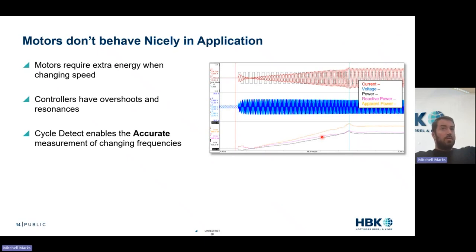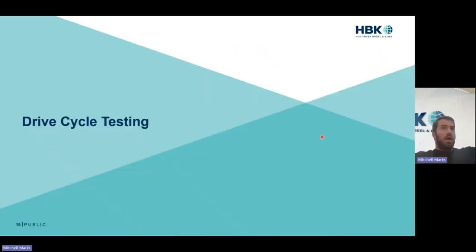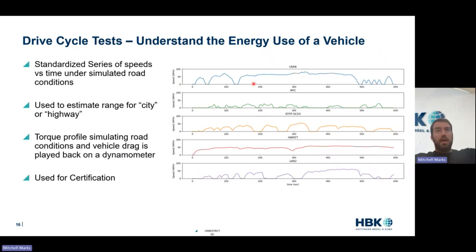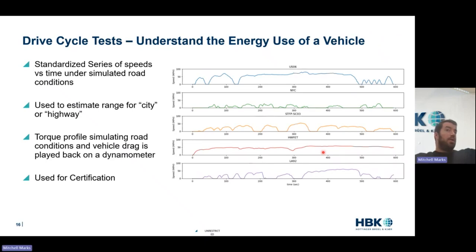In practice, this is what we refer to as drive cycle testing. Another thing that won't surprise anyone from the automotive side is that we have standardized drive cycles. I have five of them on screen — some of you may be familiar with WLTP, WLTC, NYC, and LA92, which is quite popular. These are standardized speed-versus-time profiles we use to compare vehicles and for certification — getting highway range, city range, and total range of the vehicle.